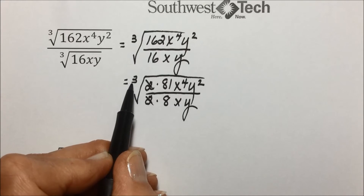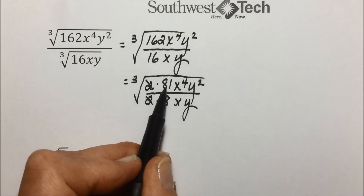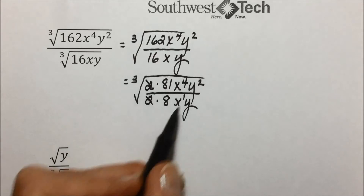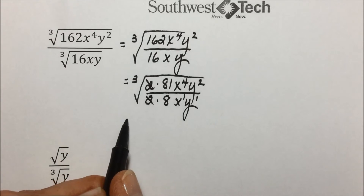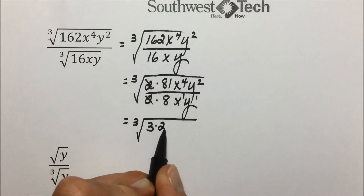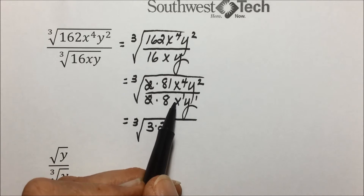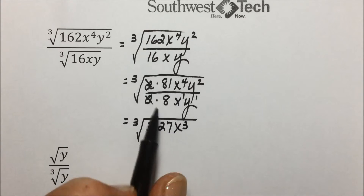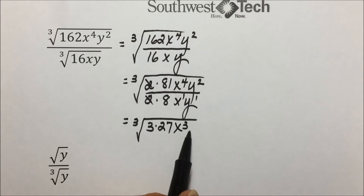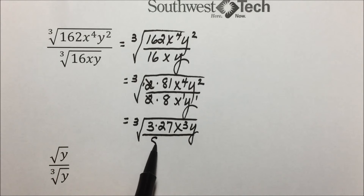Looking at 81, it's not a perfect cube, but it contains four 3s, so there is a cube in here. 8 is a perfect cube. 81 is 3 times 27, with 27 being a perfect cube. Common bases: x to the 4th over x to the 1st, 4 minus 1 leaves x to the 3rd. Common bases with the y's: 2 minus 1 leaves y to the 1st power. The 2 over 2 already canceled, leaving 8 in the denominator.